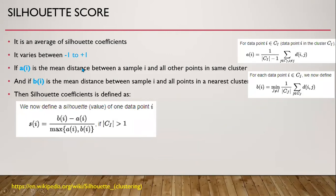The Silhouette score is an average of Silhouette coefficients. The Silhouette score ranges from minus one to plus one. If A is the mean distance between a sample i and all other points in the same cluster, that is a(i), and if B is the mean distance between sample i and all points in the nearest cluster, that is b(i), then this formula gives the Silhouette coefficient. The average of Silhouette coefficients is the Silhouette score.